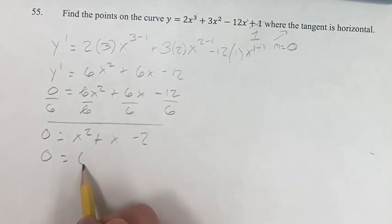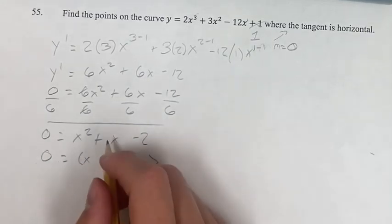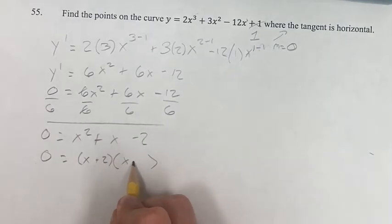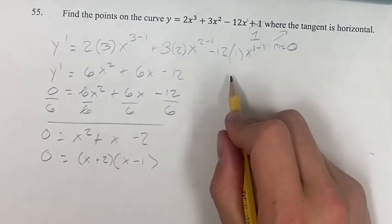Now this is something that's really easy to factor. We have x and x, factors of negative 2 that add to positive 1. It's going to be positive 2 and negative 1.